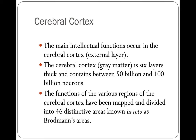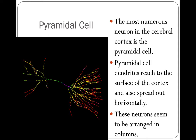The main intellectual functions occur in the cerebral cortex. Cortex means external layer. The cerebral cortex is made up of gray matter, has six layers, and contains between 50 billion and 100 billion neurons. The functions of the various regions of the cerebral cortex have been mapped and divided into 46 distinctive areas known as Brodmann's areas. The most numerous neuron in the cerebral cortex is the pyramidal cell — it's shaped like a triangle, like a pyramid. Pyramidal cell dendrites reach to the surface of the cortex and also spread out horizontally, and these neurons seem to be arranged in columns.